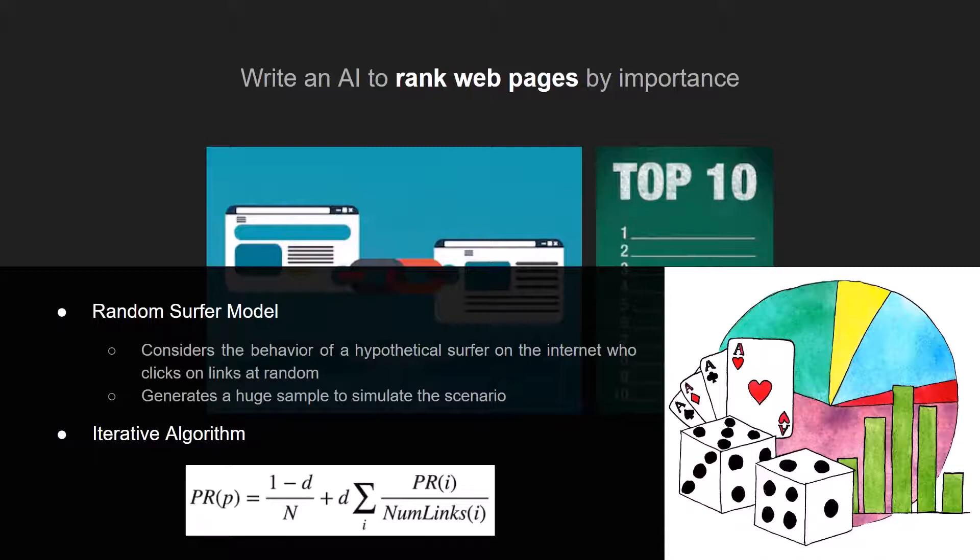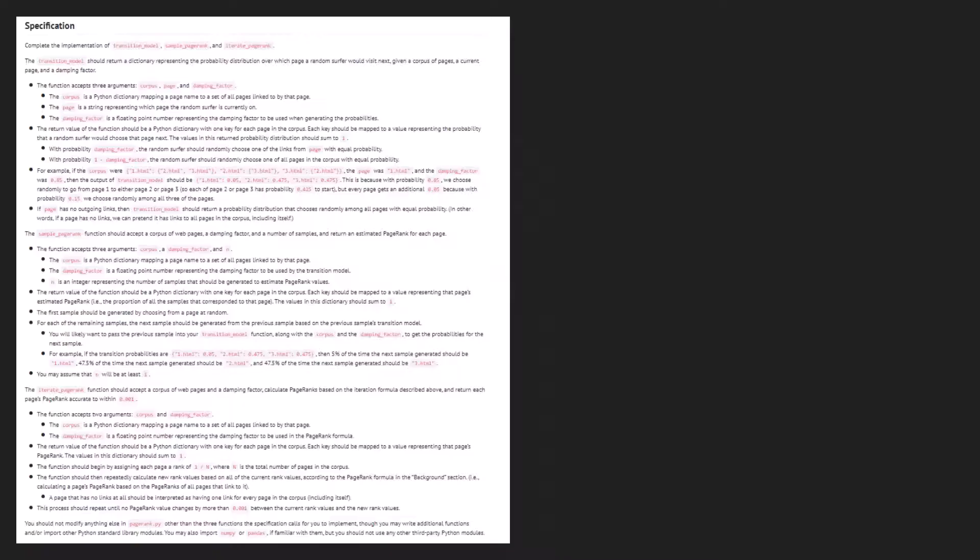So there are two models proposed. The first one is the random surfer model which considers the behavior of a hypothetical surfer on the internet who clicks on links at random. And to do this model we generate a huge sample to simulate the scenario. The other option is to do an iterative algorithm which follows the formula depending on the number of links that redirect to the specific web page.